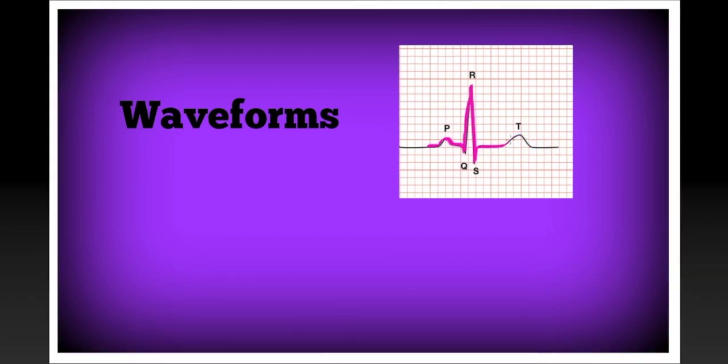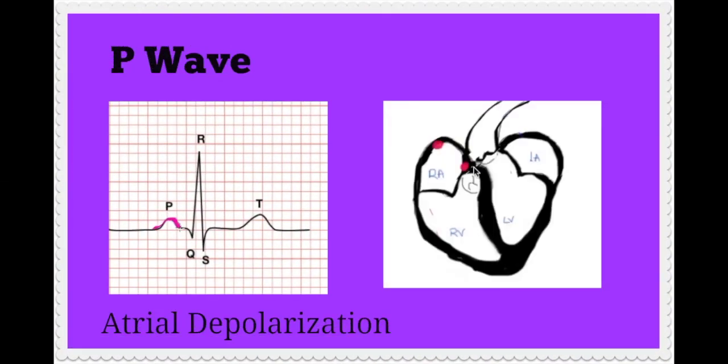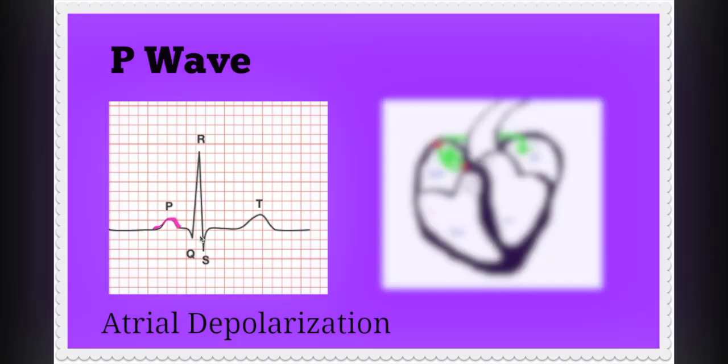So let's start at the beginning. The P wave is the first component of a normal ECG waveform and it represents contraction of the atria, also known as atrial depolarization. This is the conduction of electrical impulses from the SA node through the atria to the AV node.